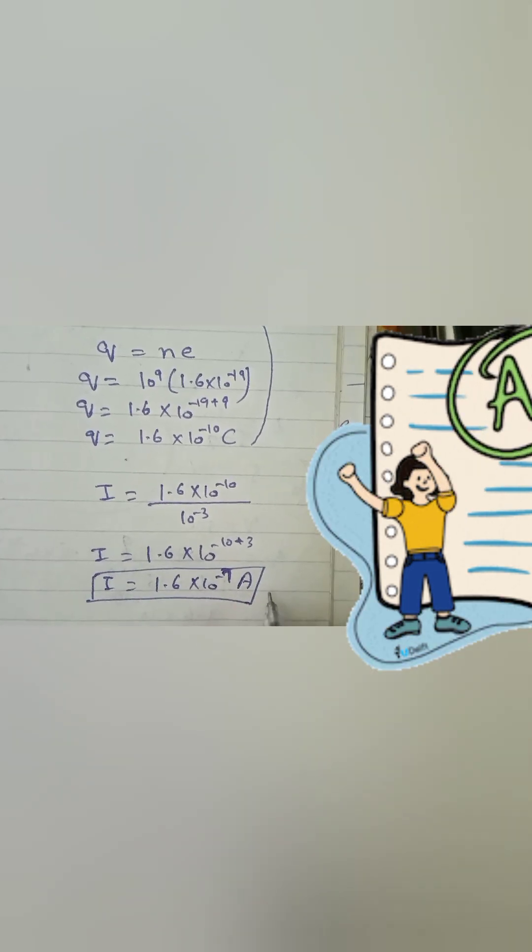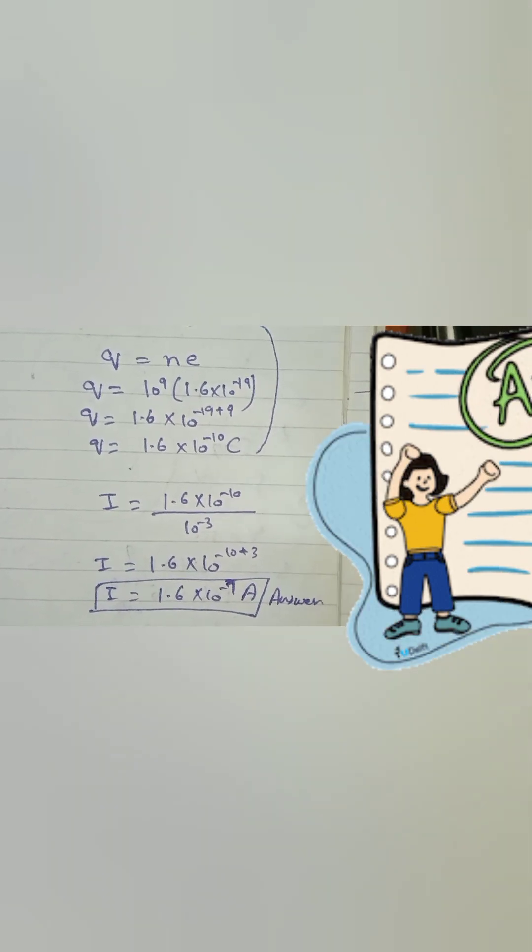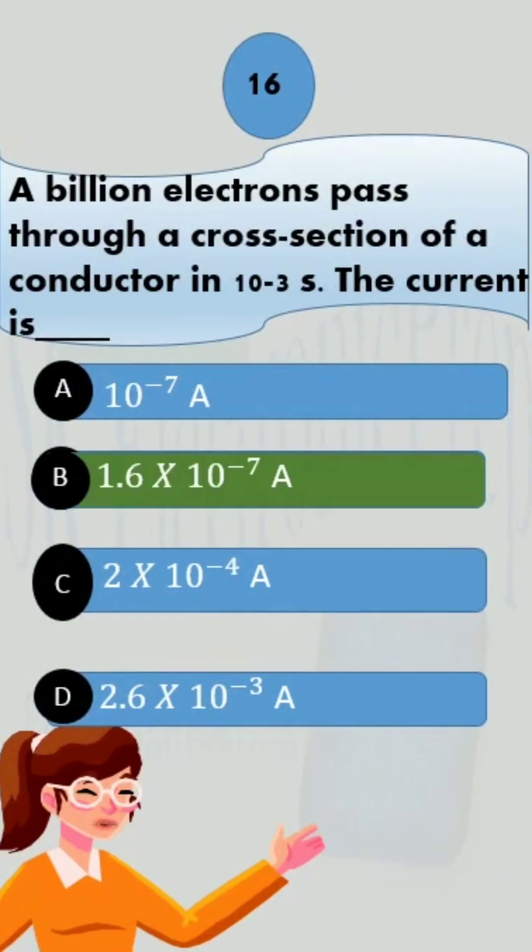Look for this in the options. The correct answer is option B, 1.6 into 10 raised to the power minus 7 ampere.